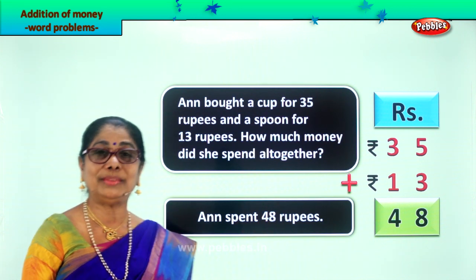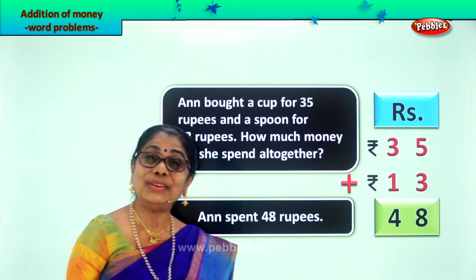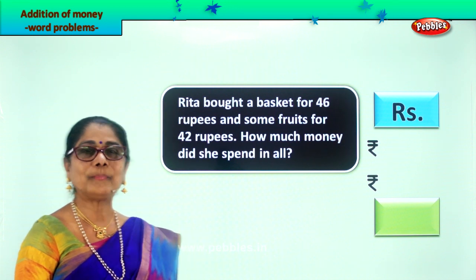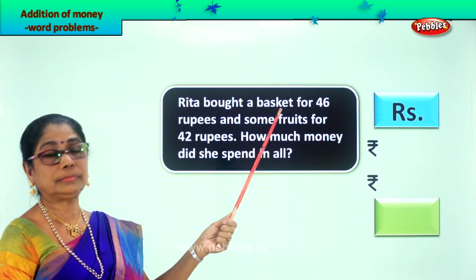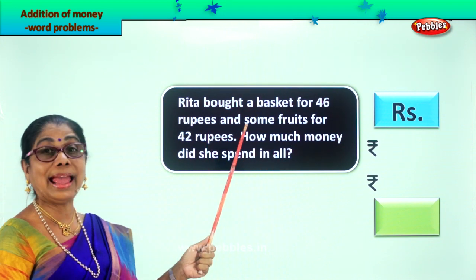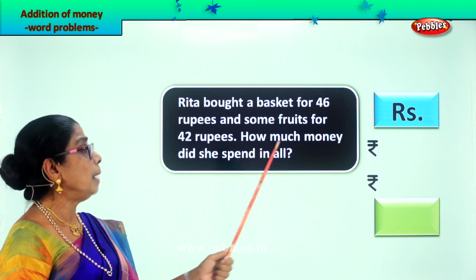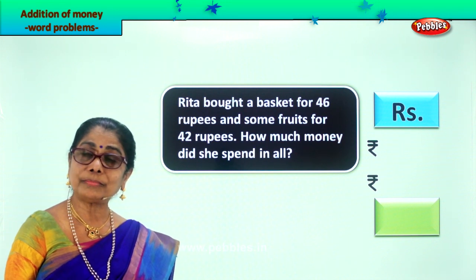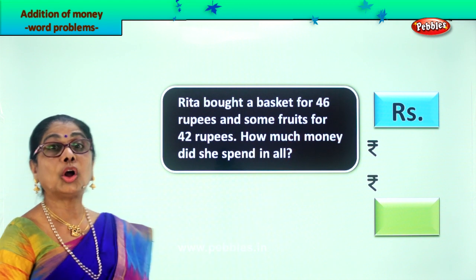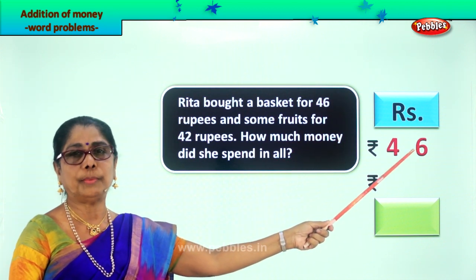She spent 48 rupees to buy a cup and a spoon. Did you enjoy working out the addition of word problems? Let's take another problem. Rita bought a basket for 46 rupees and some fruits for 42 rupees. The question is: how much money did she spend in all? We have to find the total amount spent.